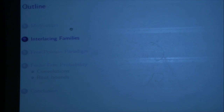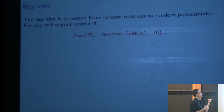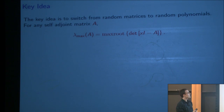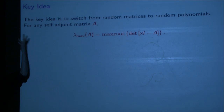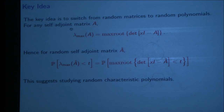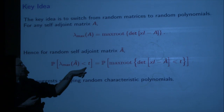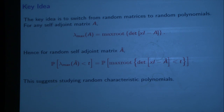We're going to use the method we developed called interlacing families. The key idea is to switch from random matrices to random polynomials. For any self-adjoint matrix, instead of looking at the maximum eigenvalue, you take the characteristic polynomial and look at the maximum root. The probability that your lambda max is less than t equals the probability that your maximum root is less than t, which suggests studying random characteristic polynomials. But we need a way to compare the roots of a collection of polynomials with the roots of the average — which in general is not possible, since adding matrices gives no guarantee that roots remain real or are comparable to the original polynomials.